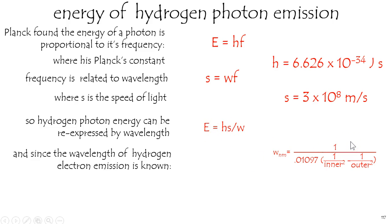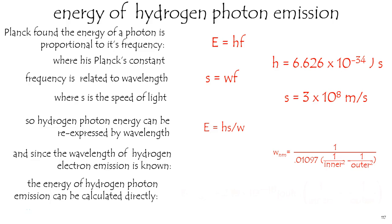I'll save you some of the math. I encourage you to try it on your own. But if you do all that, plug it all in, you can find that the energy of a hydrogen electron, as it goes from an outer shell to an inner shell, can be calculated directly. It's equal to that many joules, which is a very small number of joules,